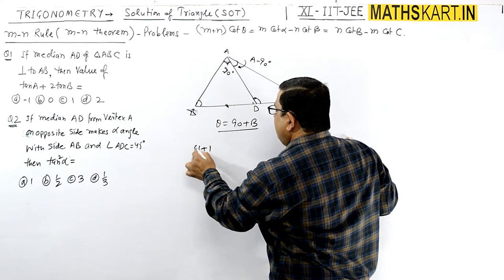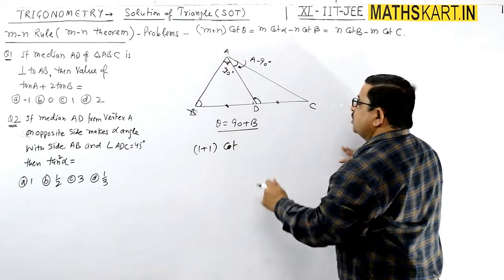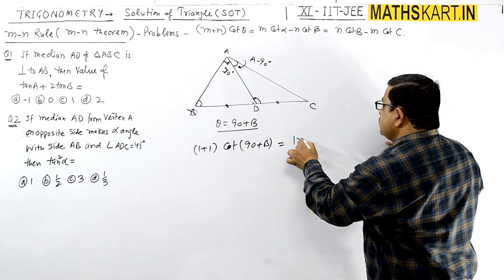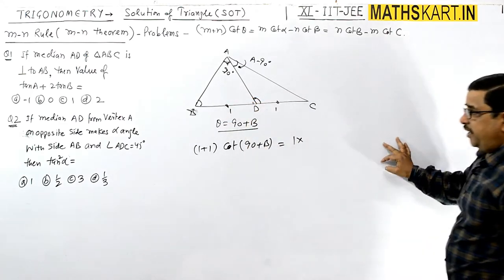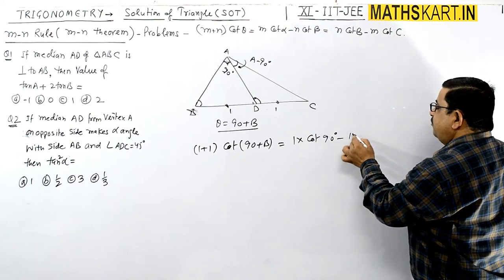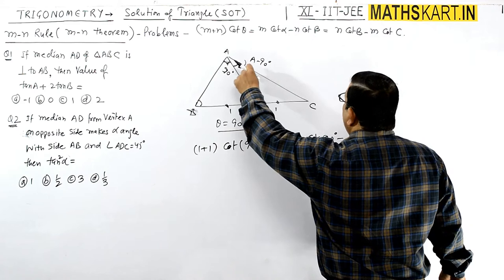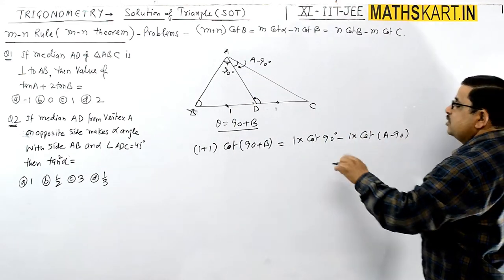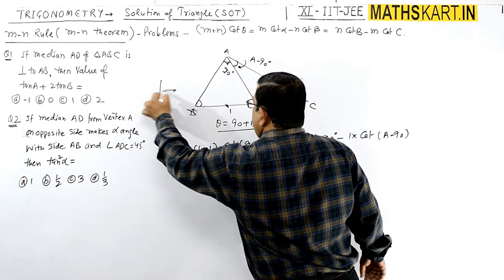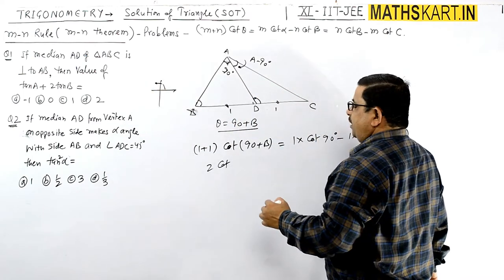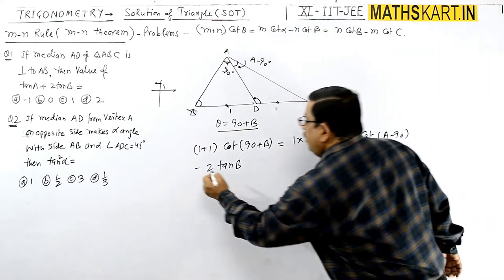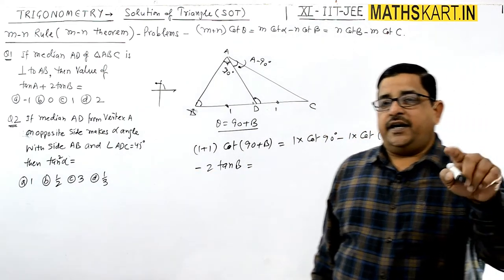So using the MN theorem: (M+N) = 1+1 and cot(θ). In place of theta we use 90 + B. M is 1 because it is a 1:1 ratio since AD is a median. So: 2·cot(90+B) = 1·cot(90°) − 1·cot(β). Now cot(90+B) is in the second quadrant, so this equals −tan(B).